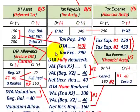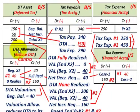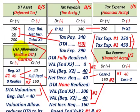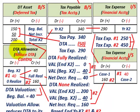Now let's go down and set up the deferred tax valuation allowance account. This is a contra account. What we're doing with this valuation account is reducing our deferred tax asset, and it's also going to affect our tax expense. For a contra account, the credits and debits are opposite compared to the deferred tax asset.